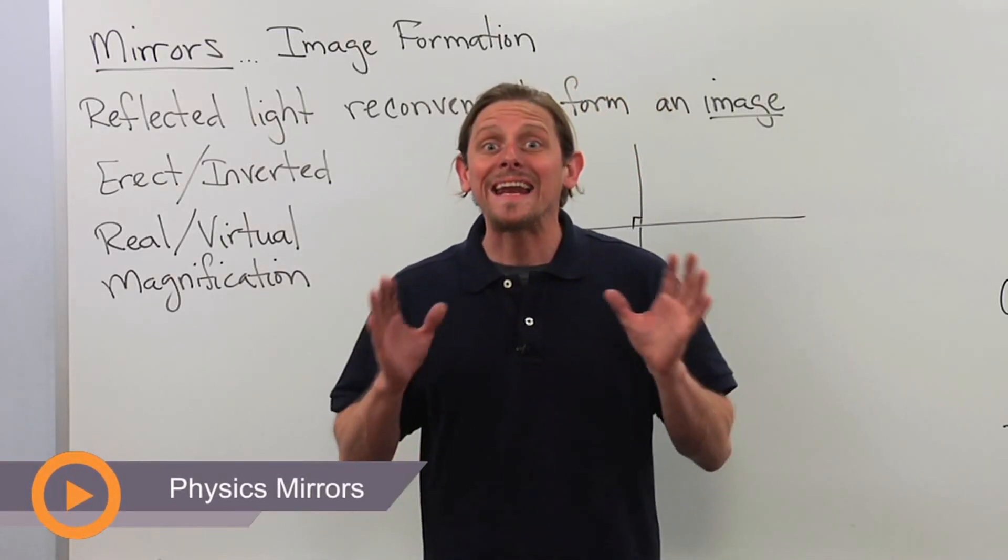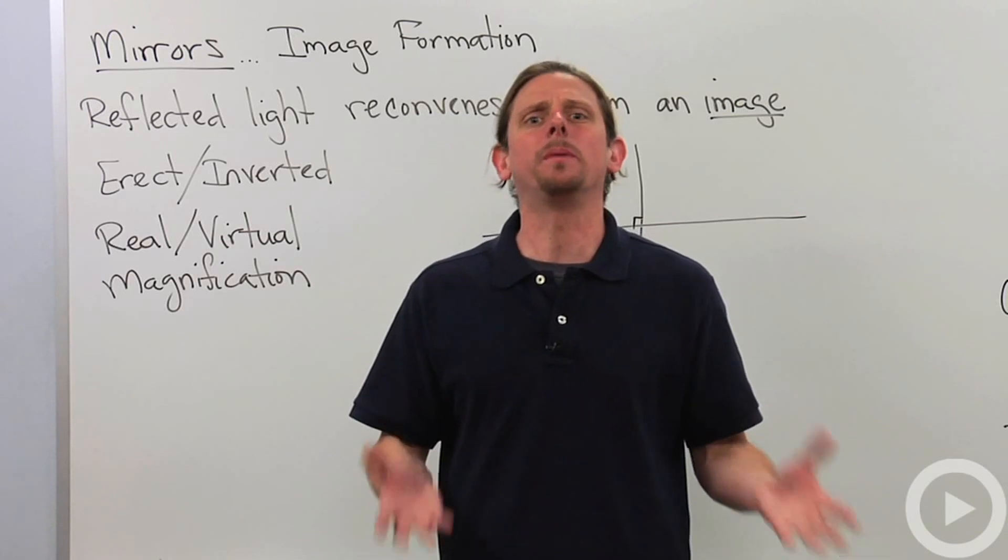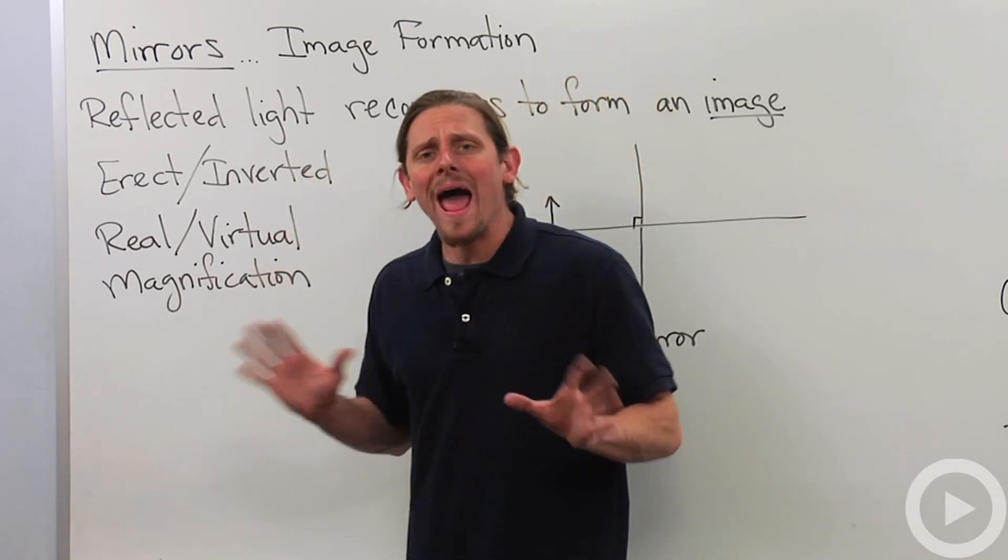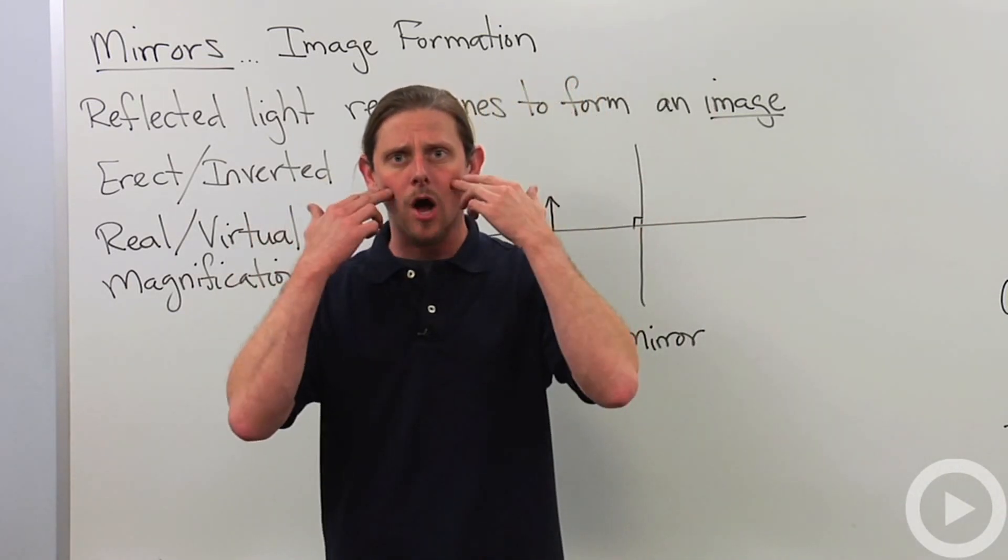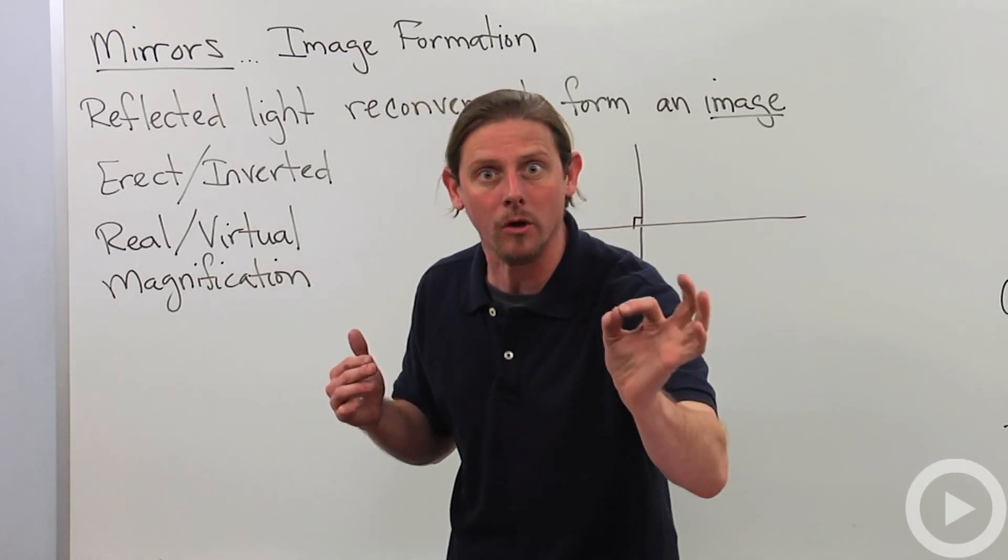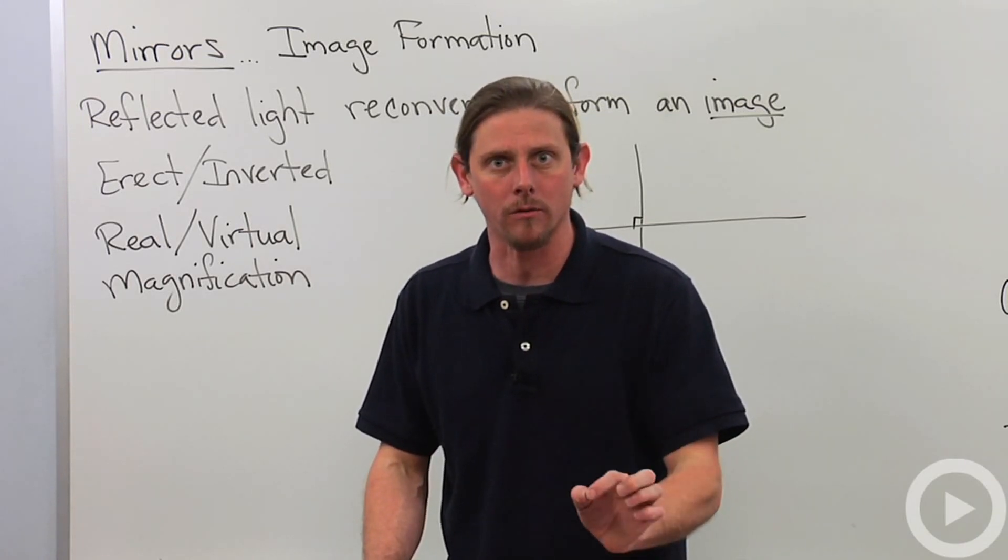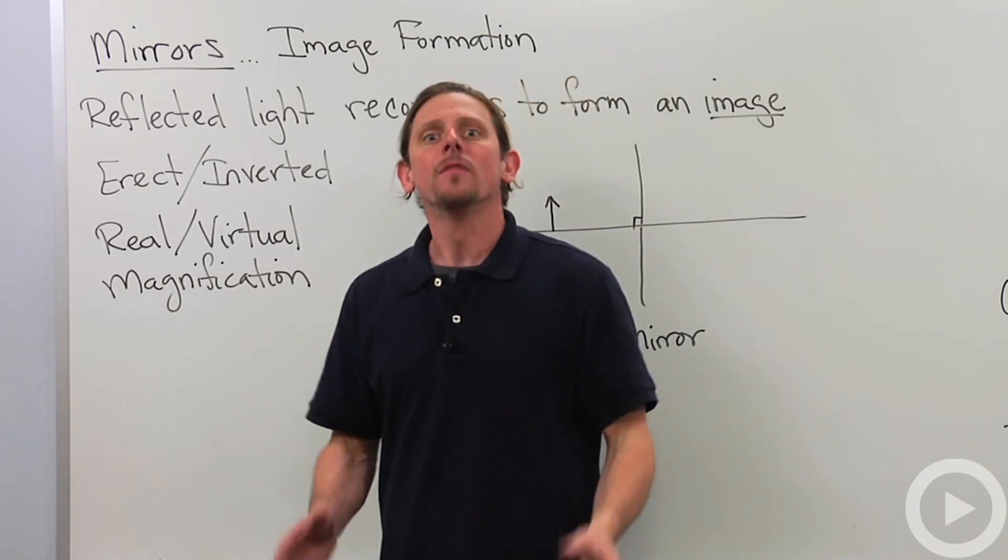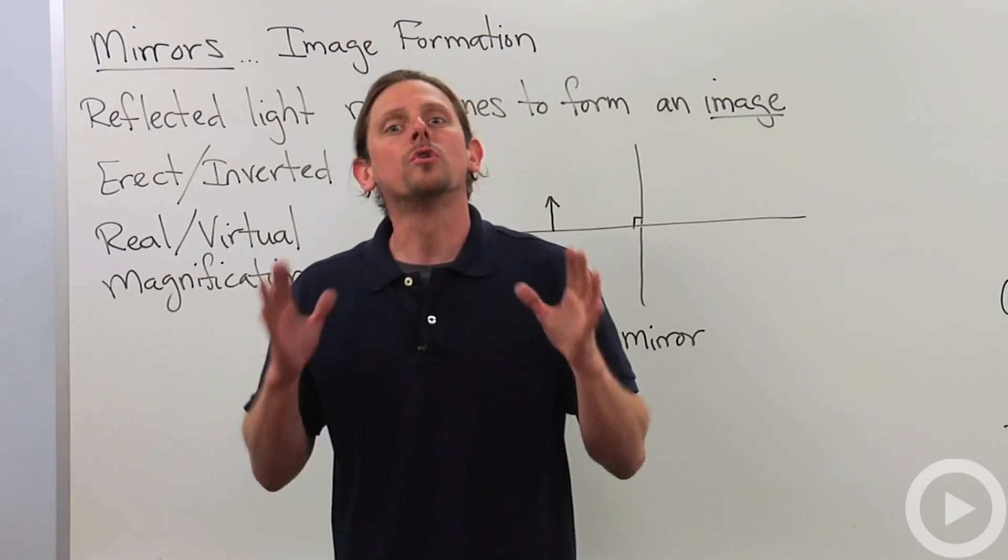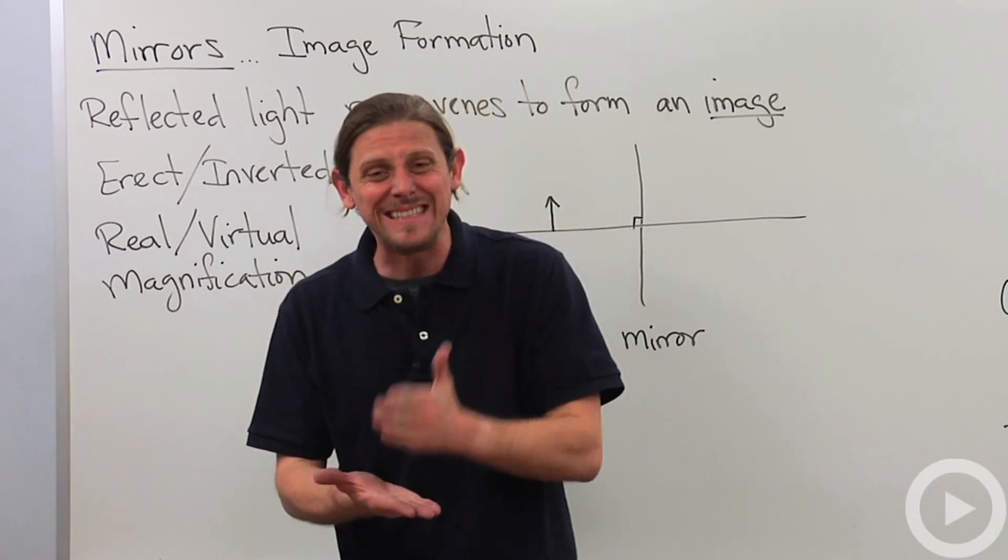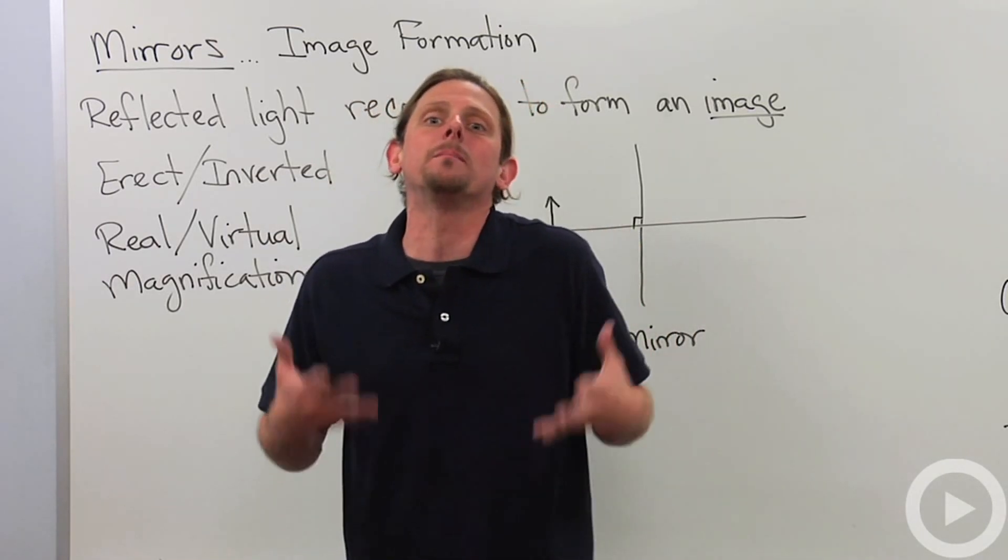So let's talk about mirrors and image formation. Before I get too much into this, I really want to talk about what it means to be an image. What happens is we take an object and put it in front of a mirror. The light reflects off that object, then goes and reflects off the mirror. The important thing is what happens to the light after it reflects off the mirror.